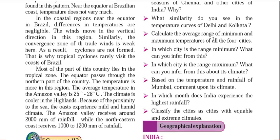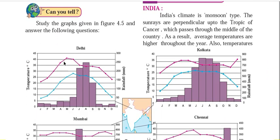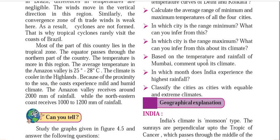In which city is the temperature range maximum? In Delhi, the temperature range is maximum because it is a continental place with no moderation effect. You can observe extreme cold and extreme heat in continental places like Delhi — in winter, temperature drops to 1-3 degrees Celsius, while maximum temperature can reach 41 to 45 degrees Celsius. This is a characteristic feature of continental climates.